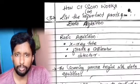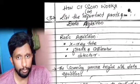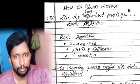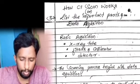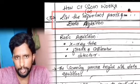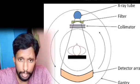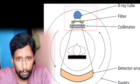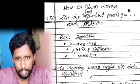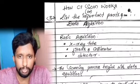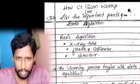How CT scan works: the basic principle involves reconstruction from multiple projections. The important parts of the data acquisition system include the X-ray tube, filters, collimator, and detectors. The scanning process begins with data acquisition.